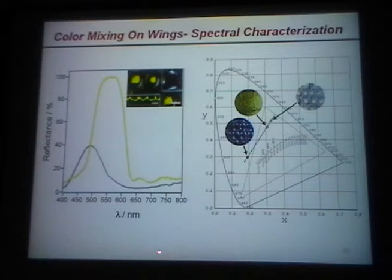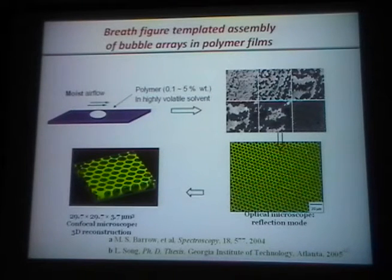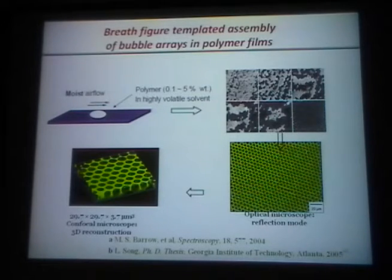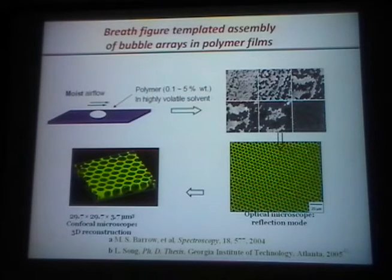You can do spectroscopy to figure out what the color mixing is. We try to mimic this using a process we've spent a lot of time thinking about. You take a very dilute polymer solution — this is something all of you can do, a very easy experiment. You blow moist air across, and in about one minute you end up with an ordered array of holes in the polymer film. This has its roots in what Lord Rayleigh did and what CTR Wilson did — that's largely why I decided to include it here, since I am in the Cavendish lab.